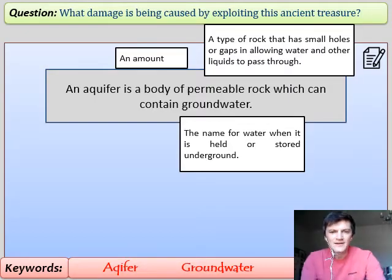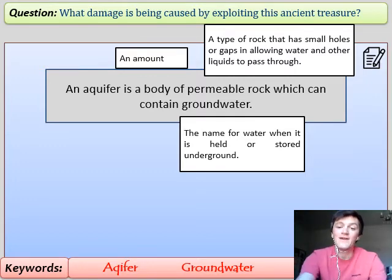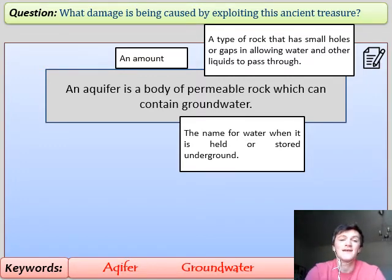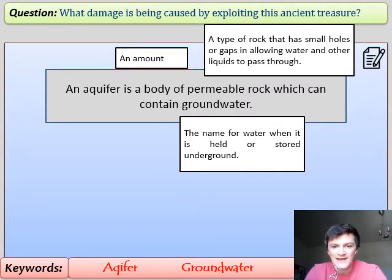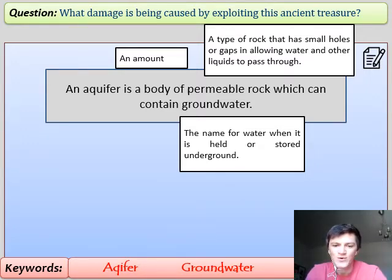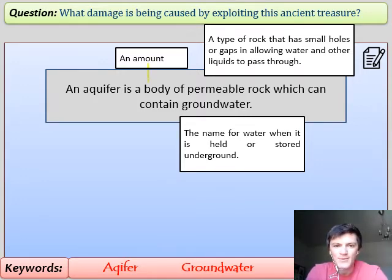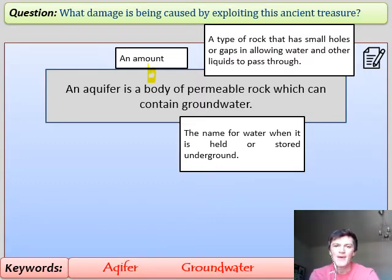Our lesson today is looking at something called aquifers. To fully access the lesson we need to understand what an aquifer is, so listen first before writing. An aquifer is a body of permeable rock which can contain groundwater. Let's unpick that: a body means an amount, and permeable rock is a type of rock which has small holes or gaps that allow water and other liquids to pass through it.